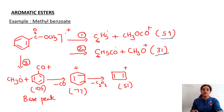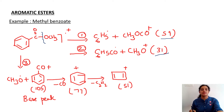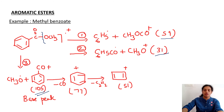The difference in aromatic esters is that CH3O dot is eliminated to give the benzene ring CO+ fragment. This then gives m/z = 77, then m/z = 51 — a familiar sequence. The base peak is at m/z = 105.